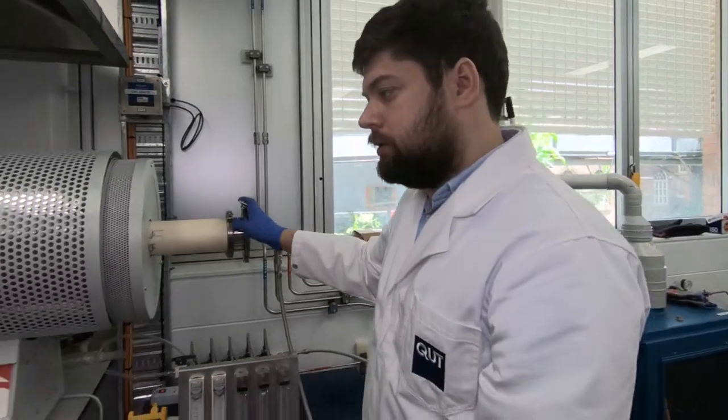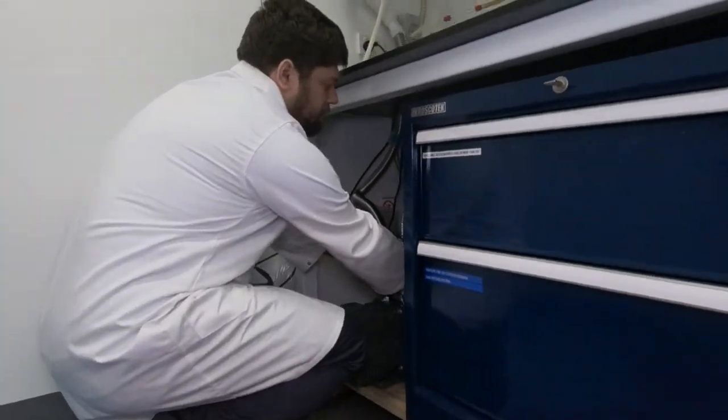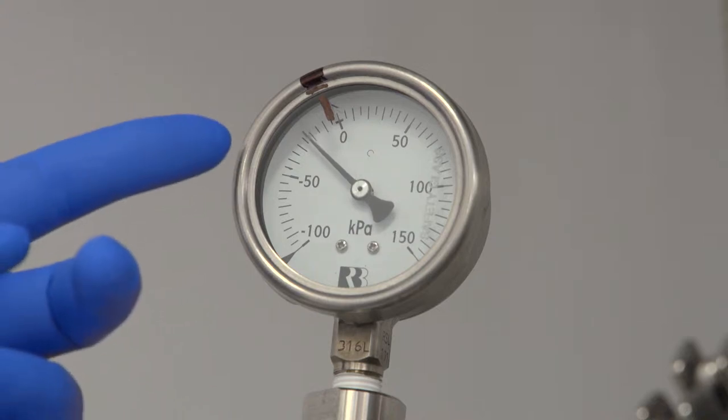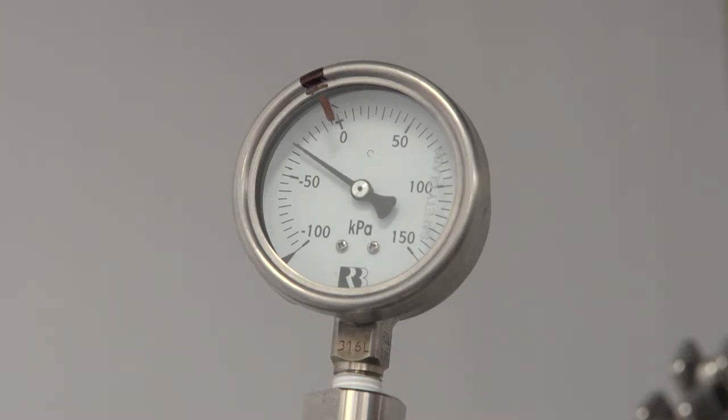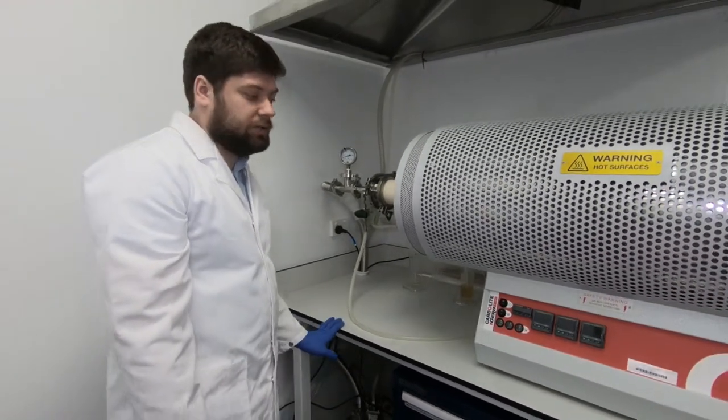Now once the furnace is closed, we can turn on the vacuum pump. Here it is. It's important to do it slowly to prevent spilling of powder. You can see over here on this meter that pressure is going down. And once it's ready, we can start heating.